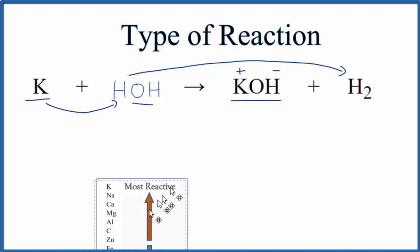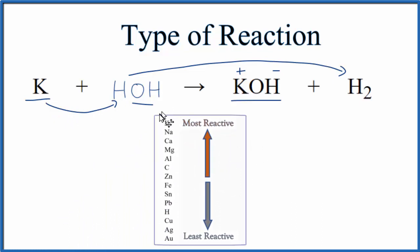To figure that out we look at the activity series here. So as we look down, here's potassium, it's very reactive right here at the top. Hydrogen is down here, so potassium is much more reactive than hydrogen.